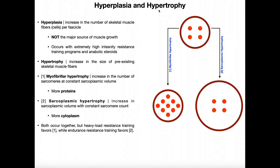Most of you probably have a fairly good understanding of how we hypertrophy muscles. Hypertrophy is an increase in the size of the muscle, but it's a little bit more complicated than that. There are actually two kinds of hypertrophy, and we're going to be differentiating those. There's also a process called hyperplasia.